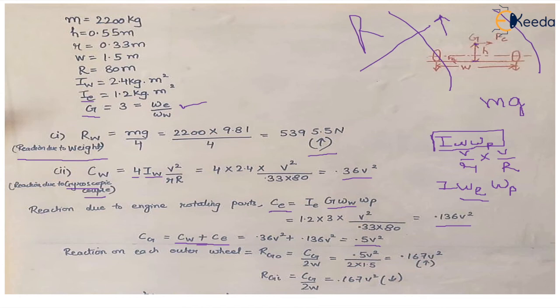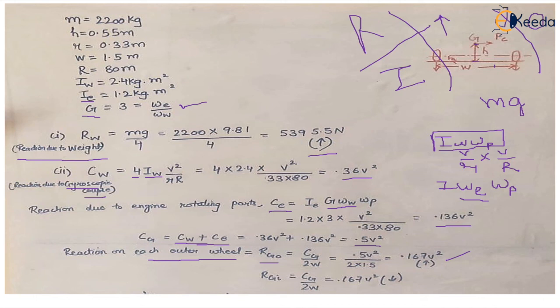This total gyroscopic couple acts on the whole vehicle. To find the reaction on each outer wheel, we use the formula: reaction = CG / (2W), where W is the track width. For outer wheels this reaction is upward and for inner wheels it is downward, with the same magnitude.